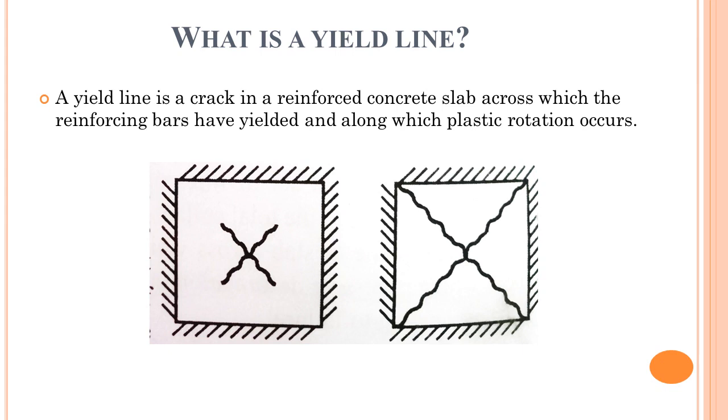So what does yield line mean? The yield line is the band of extensive cracks developed in RCC slab, across which the tension steel has got yielded.